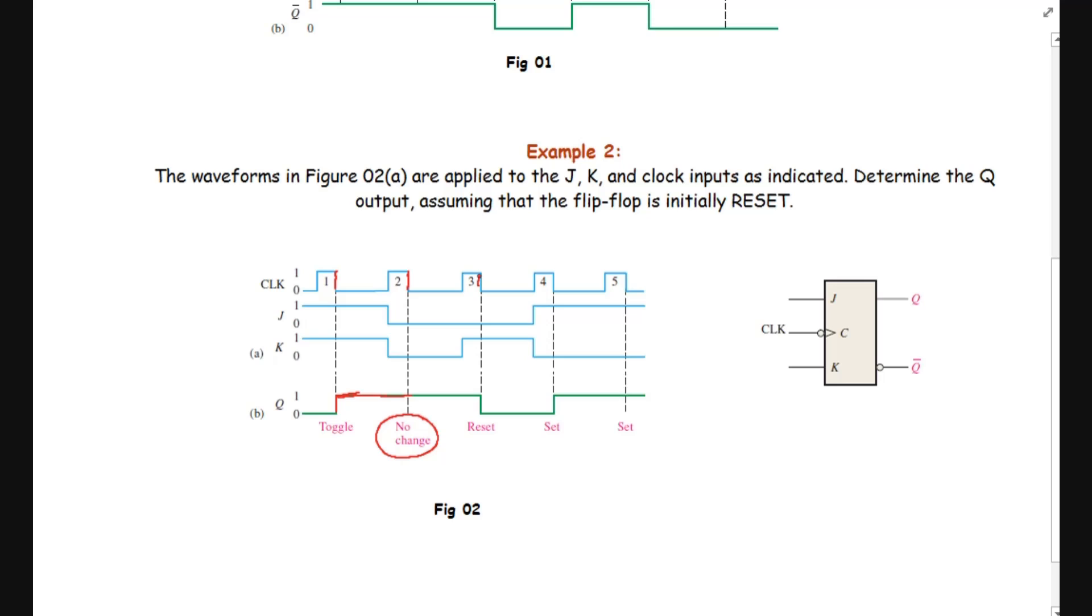Finally, at the third edge, we have J equal to 0, K equal to 1. At this state, it will go into reset condition. It will remain the same until the next stage occurs. In this state, we have J equal to 1, K equal to 0. It will now be in set condition and continue until the next waveform. The property remains the same, so up to the next waveform it continues.